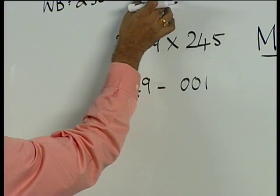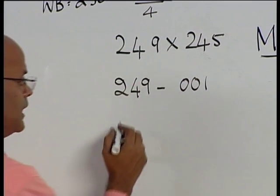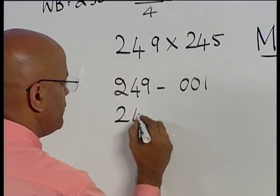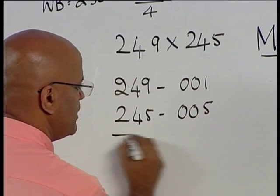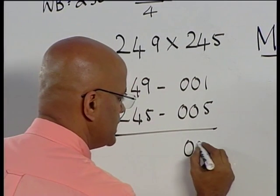So 249 is 001 short of 250. The reason why there are 3 digits is because there are 3 zeros in 1000. This is 245 minus 005. Multiply this part, you get 005.